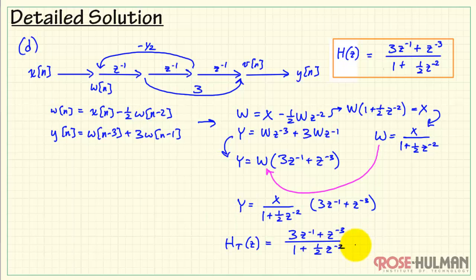Bring x to the other side because we're trying to find a system function. And the system function for our transposed flow graph appears like this, and that's our result for part d.